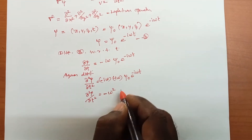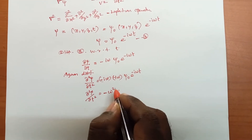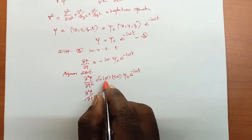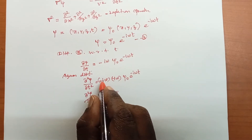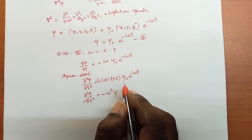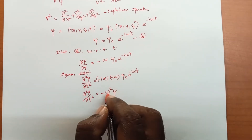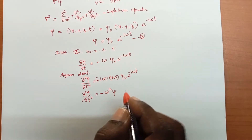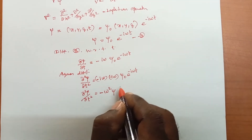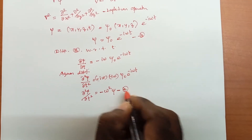Since ψ₀ · e^(−iωt) = ψ (from equation 3), we get ∂²ψ/∂t² = −ω²ψ. This is equation number 4.